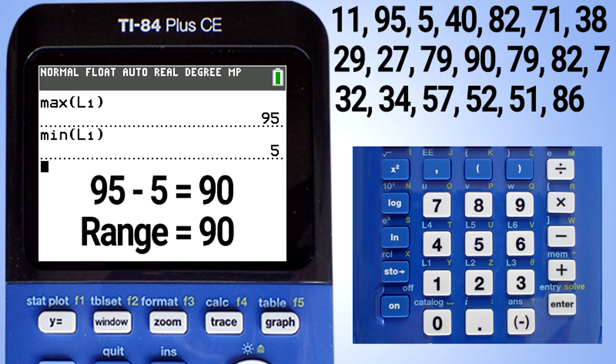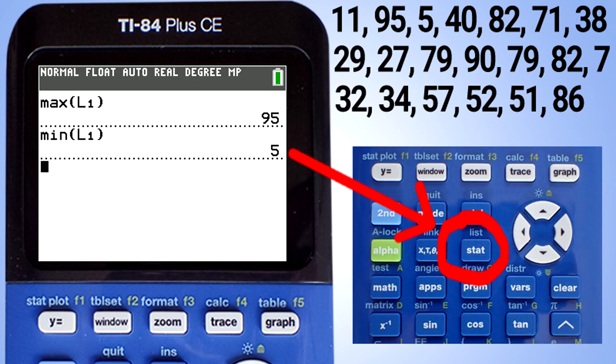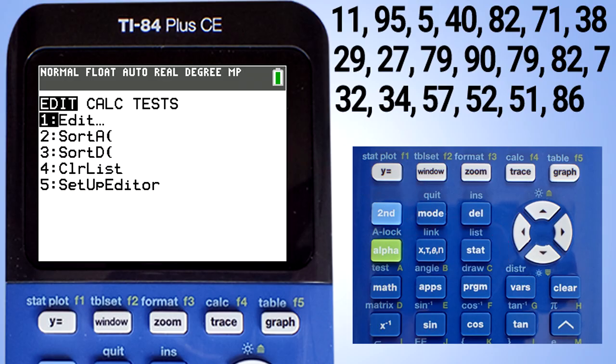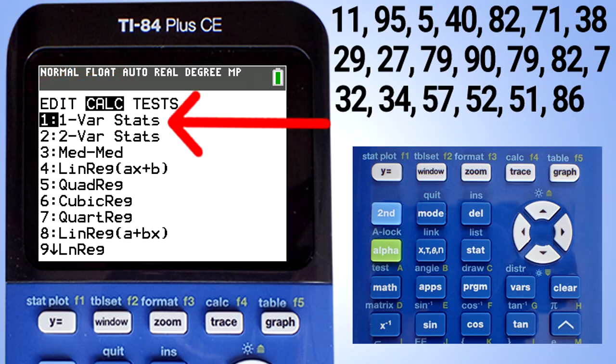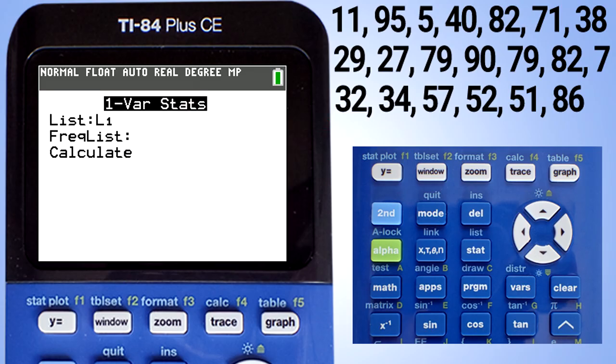Now to find the variance and the standard deviation, press the stat button. This window appears. Move to the calc tab here. We want one variable stats here. Press the enter button. This window appears.